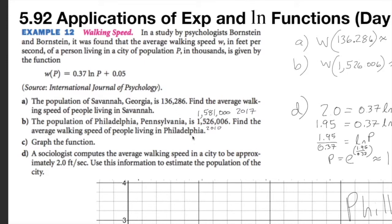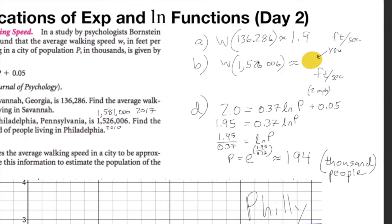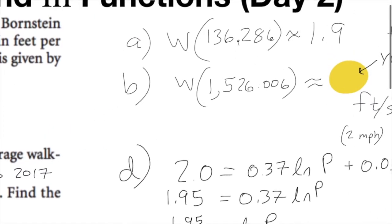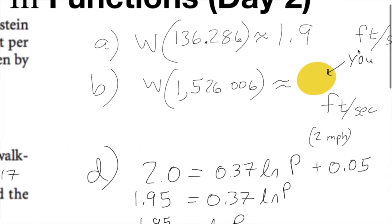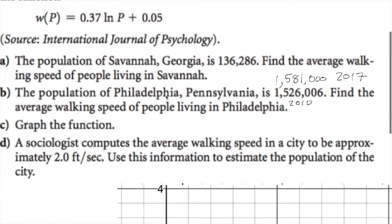Part A, you've got an input on Savannah, Georgia, and so you can see here the input is one point three, one hundred thirty six point two eight six thousand people. It's a very strange unit input, but that would approximately mate to one point nine feet per second. Check this out, Philadelphia, population of Philadelphia, Pennsylvania was, back in 2010, it was one million five hundred twenty six thousand six people. And you might have been one of them, yay.